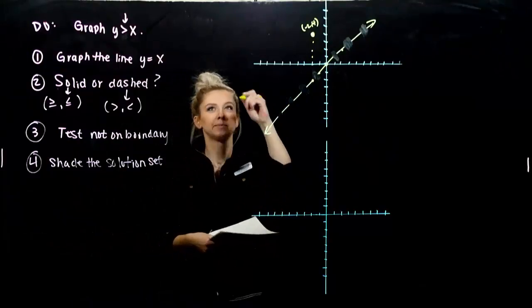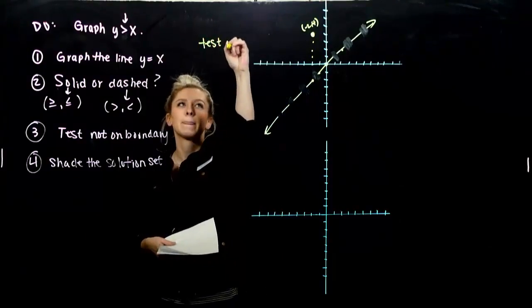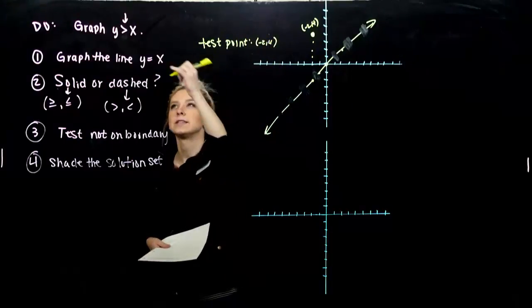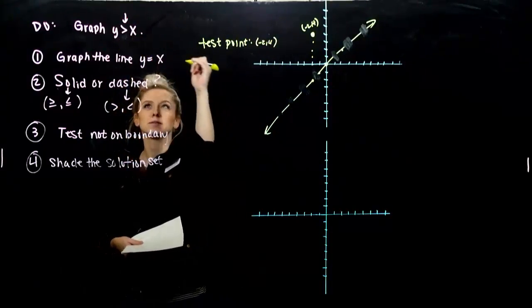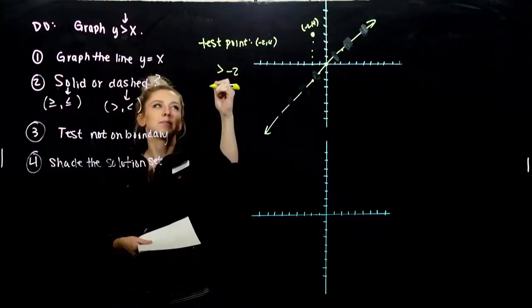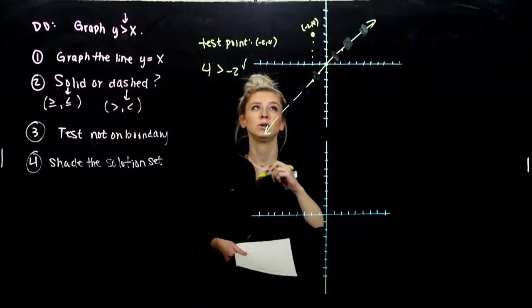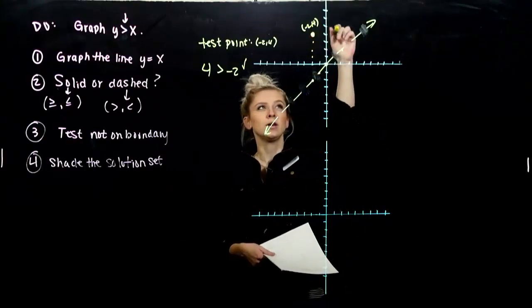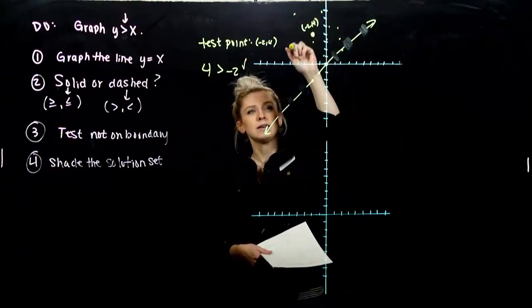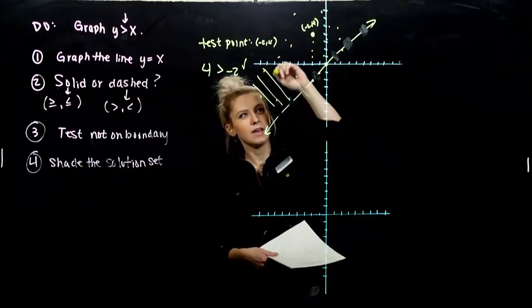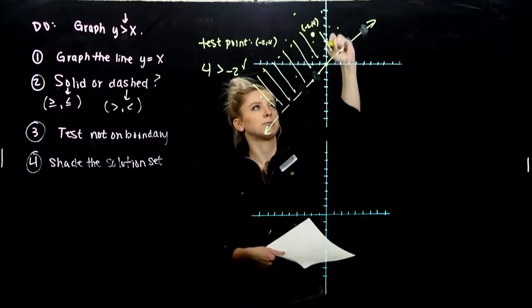So the test point minus two, four. Let's plug it in. So x is minus two. Is minus two less than four? Yes, that's true. So any point over in this half of the plane is going to satisfy that inequality. So we need to shade anything in the upper half plane.